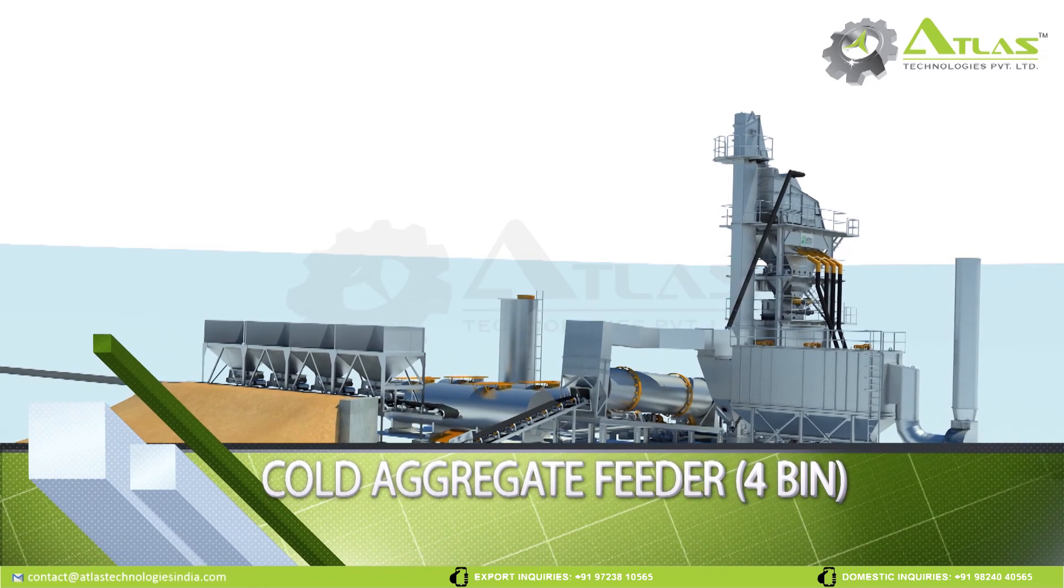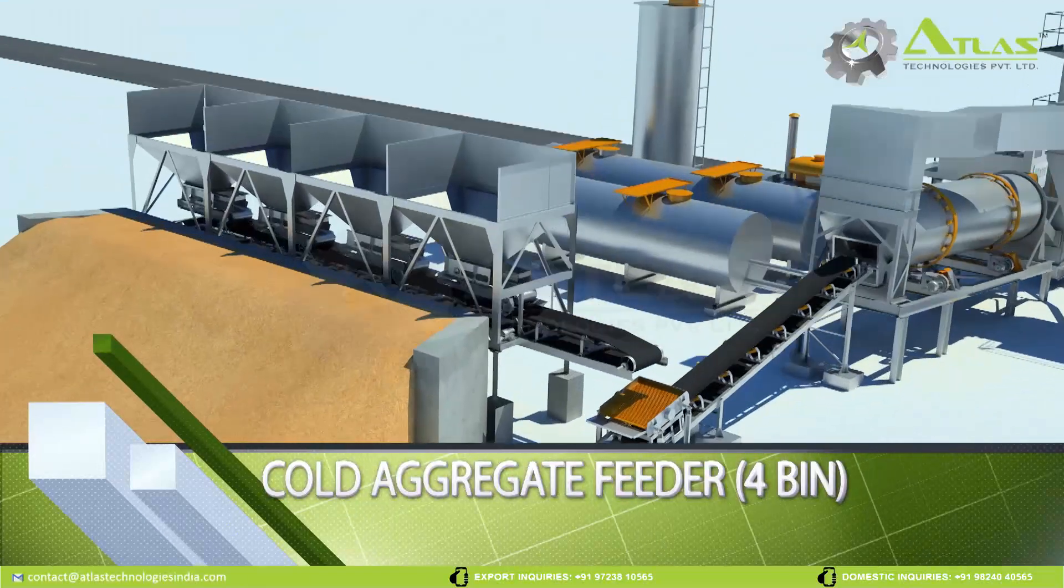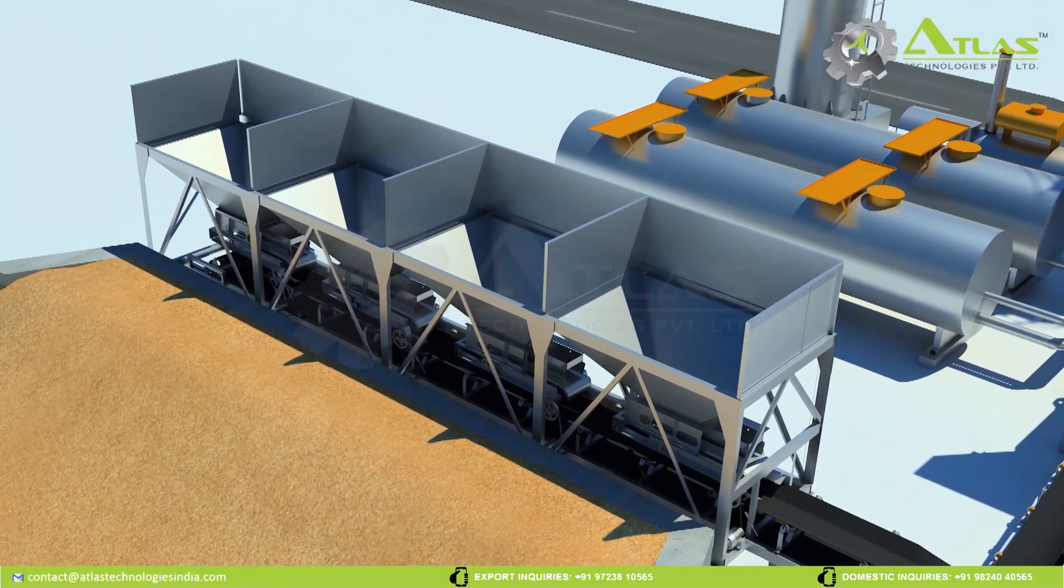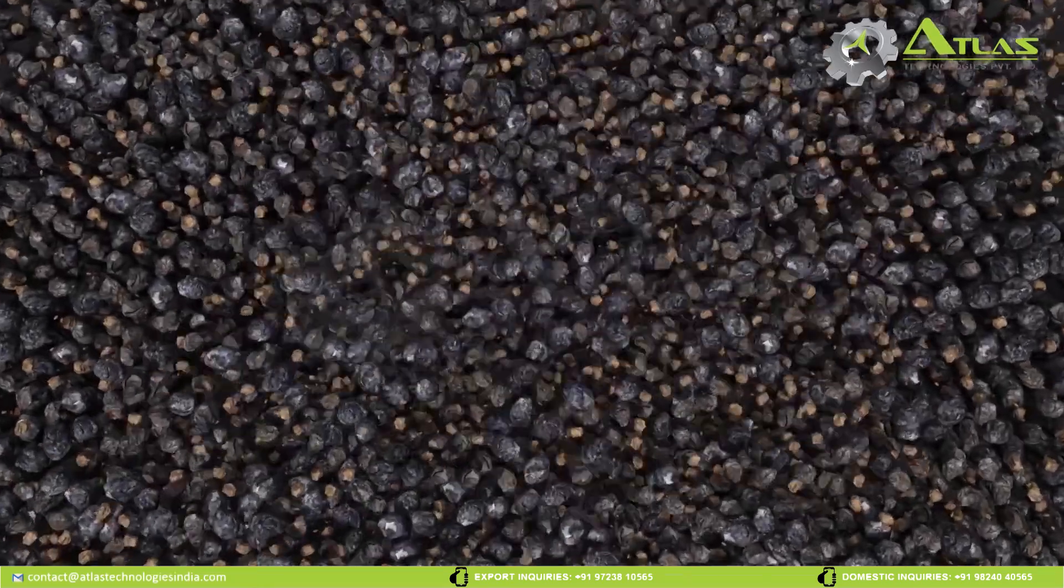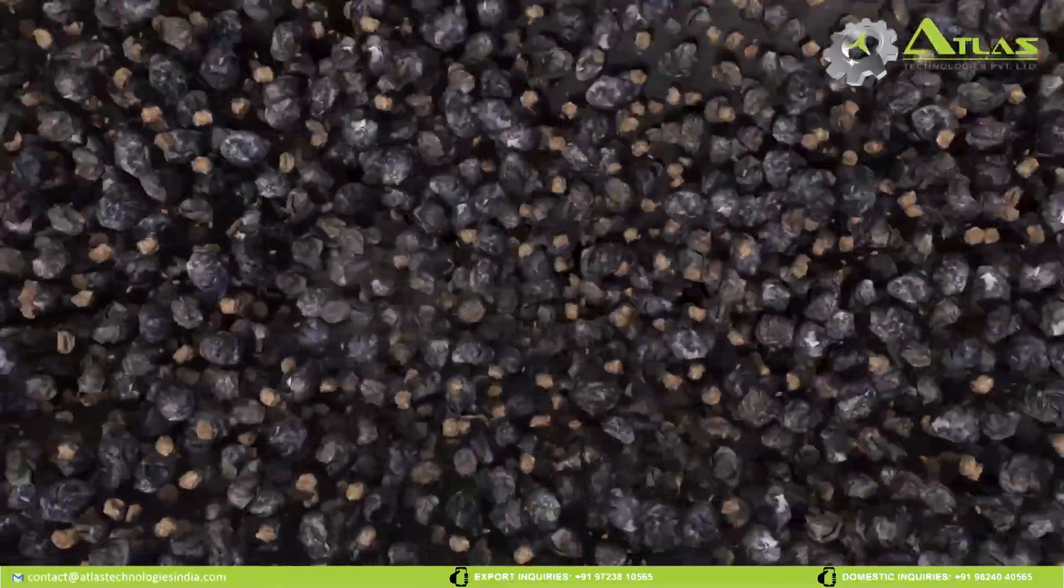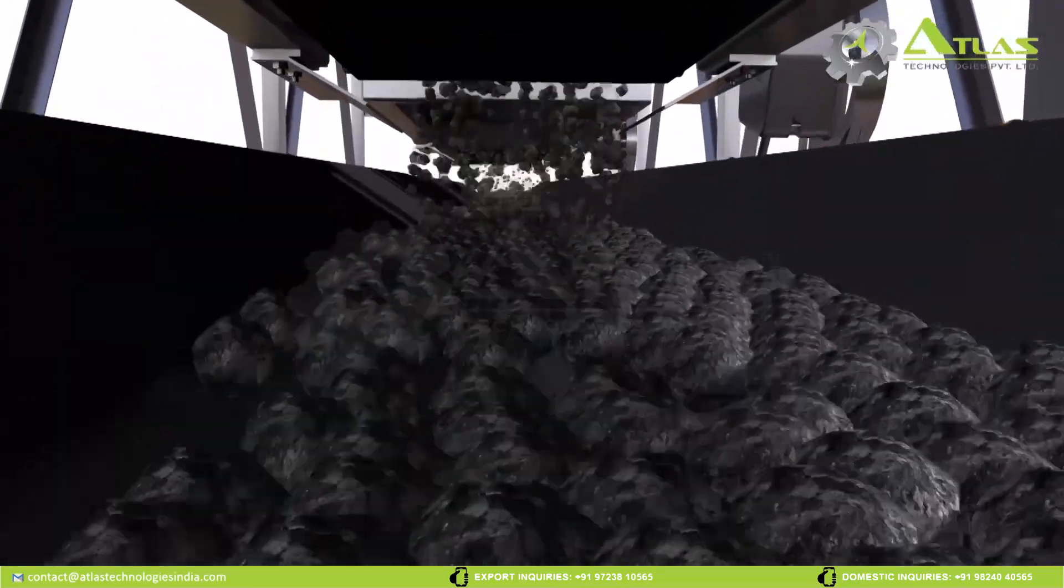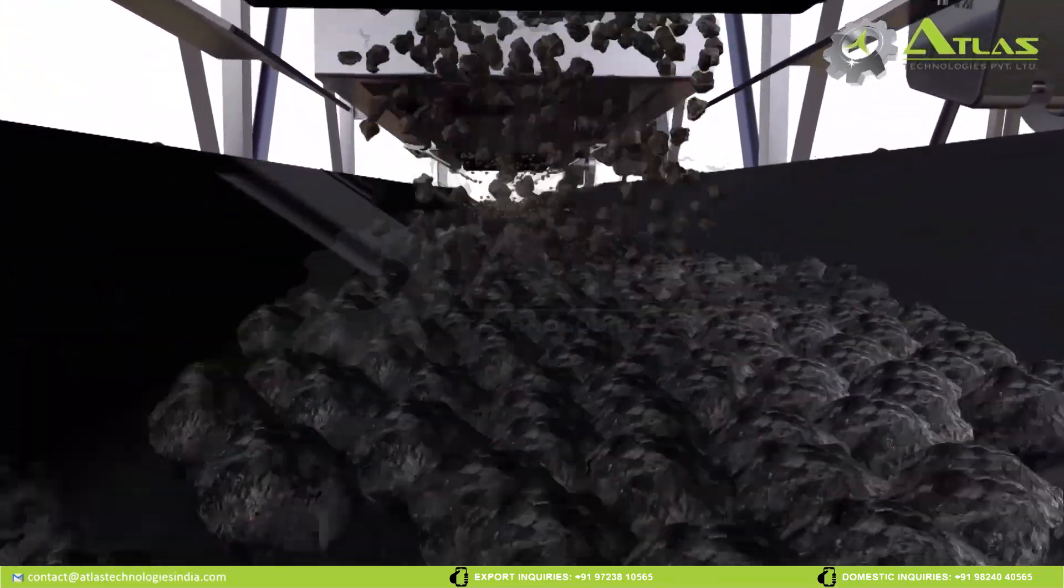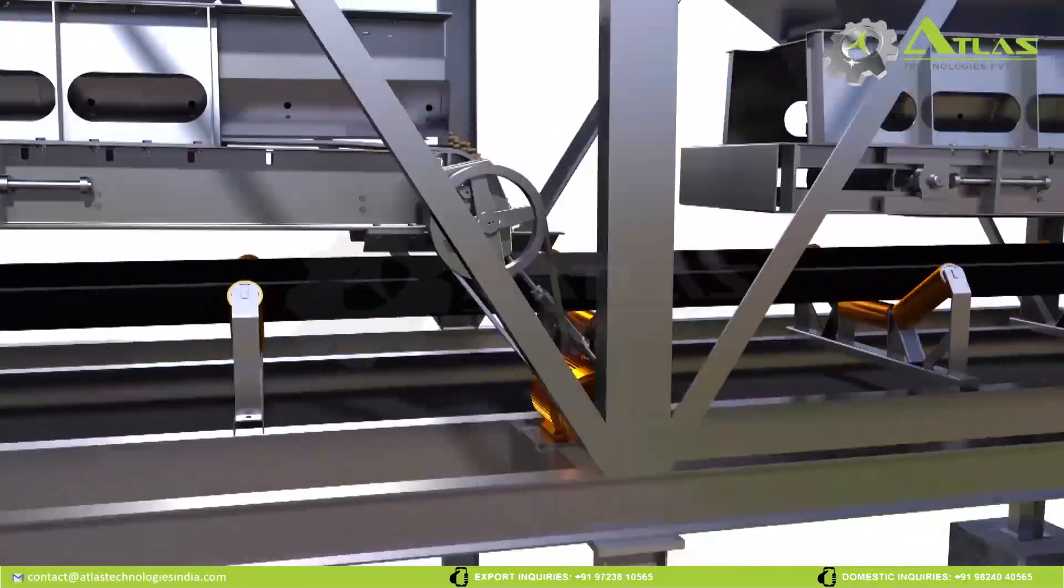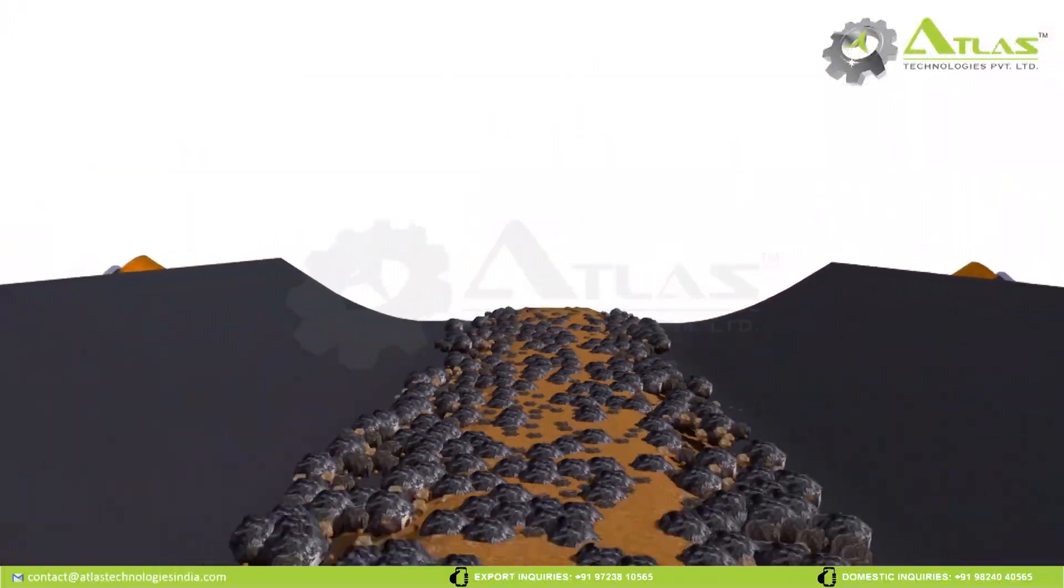Cold Aggregate Feeder. The material is poured into the cold aggregate feeder system comprising of four bins. The feeder belt conveyor is mounted under each bin. This gathering belt conveyor transports the aggregate to the vibro feeder system.